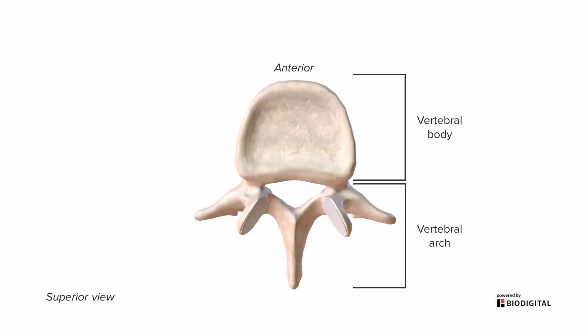What are some of the parts of this arch? The part connecting to the vertebral body is called the pedicle. There are projections pointing out laterally called transverse processes. Then there's a piece of bone called a lamina that connects to the most posterior pointy projection called the spinous process. That name makes sense if you think about animals that have spines — the spinous process is the most posterior aspect of the back.